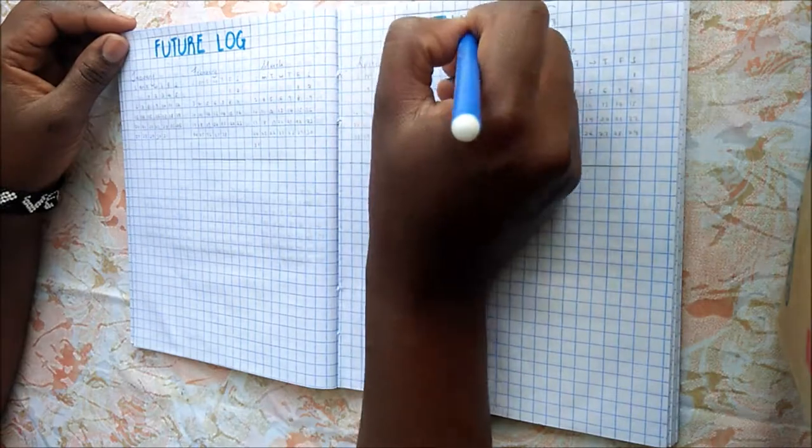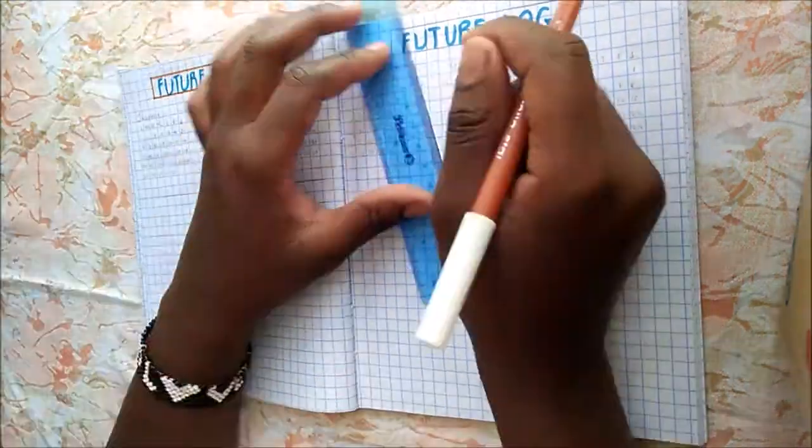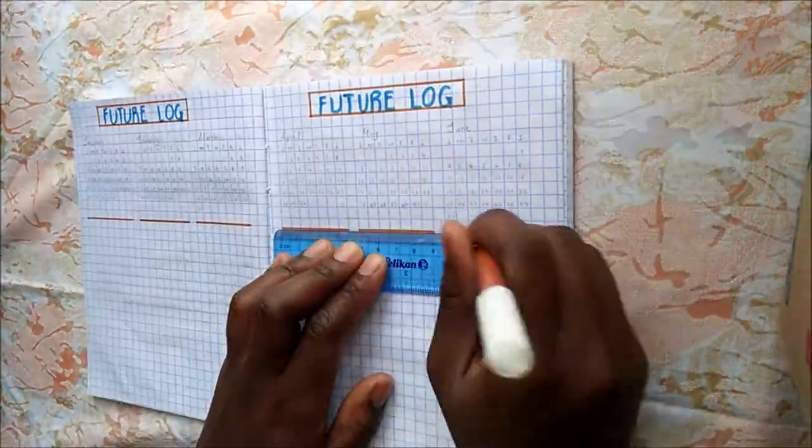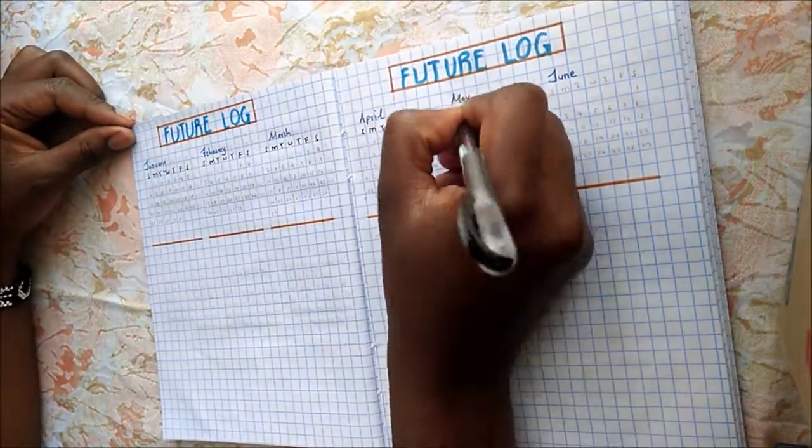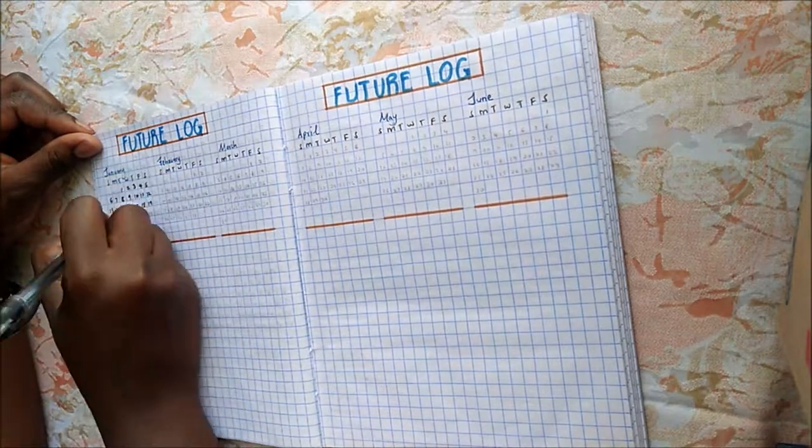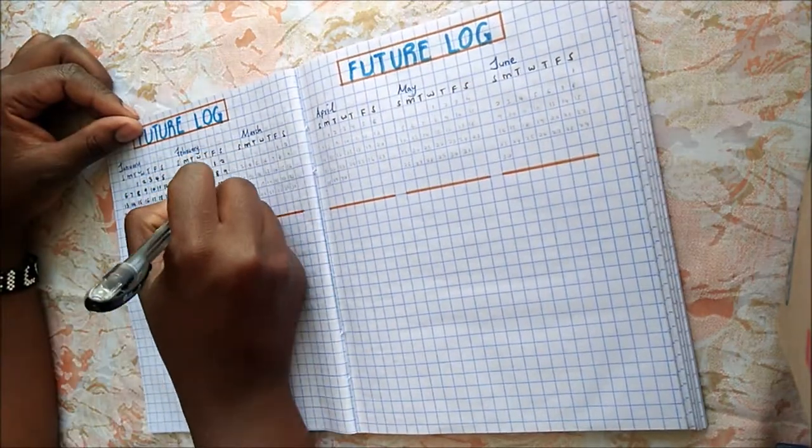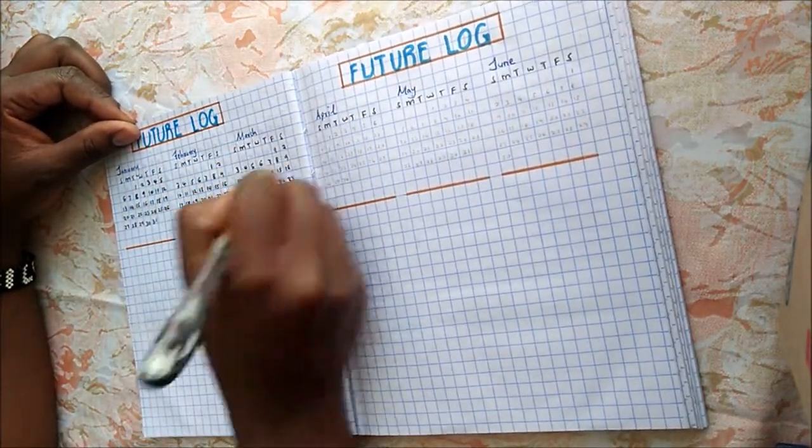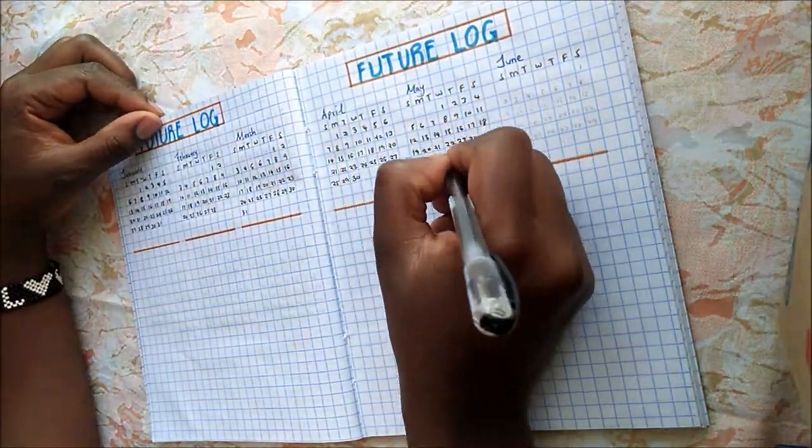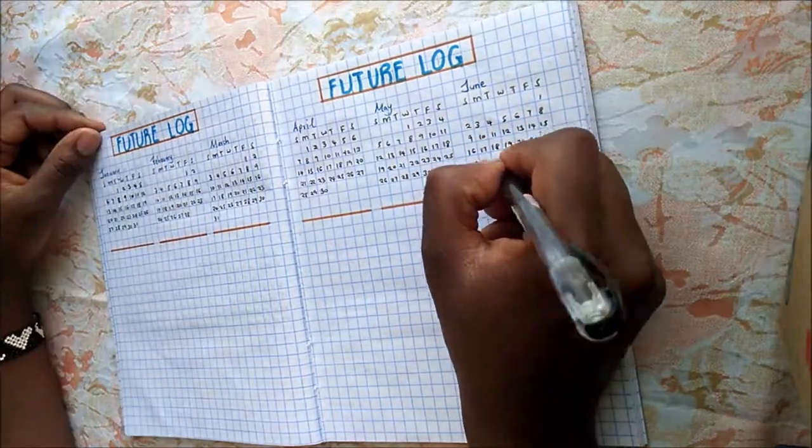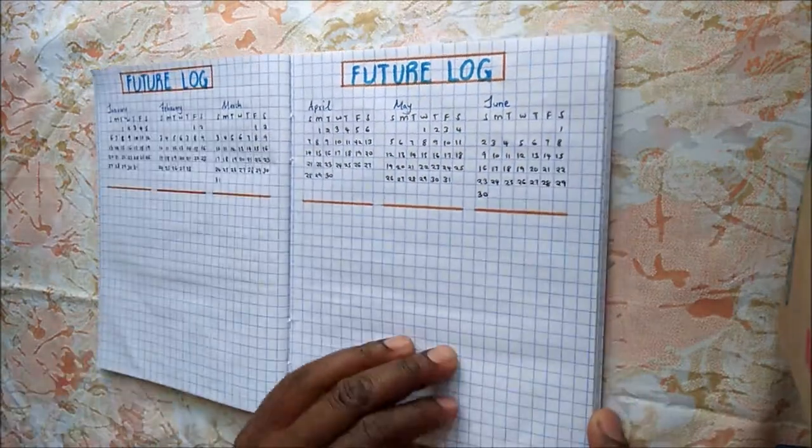Here I have my future log. This is where I'll have all my events and appointments in advance, and this way I can stay on top of my events and appointments. I will divide it into six months each between the four pages, so the first two pages will be from January all the way to June, and then the next page will be from July all the way to December.